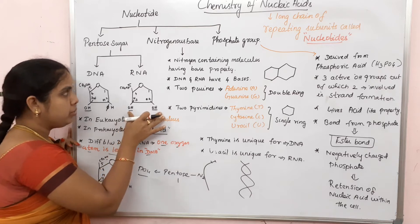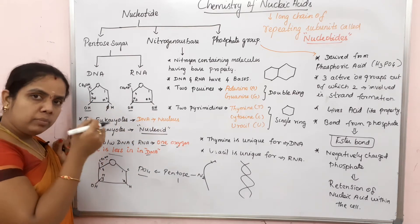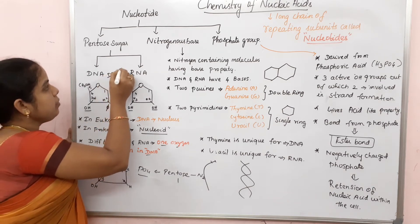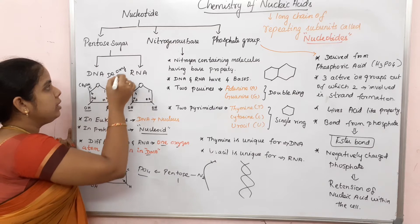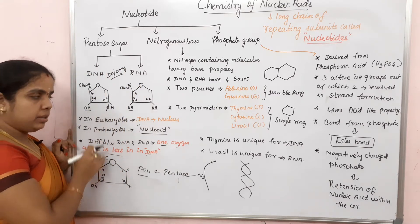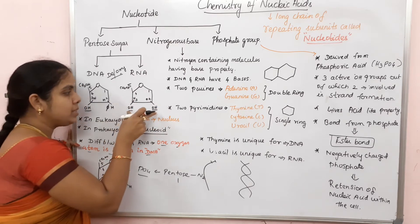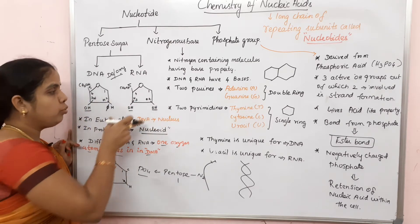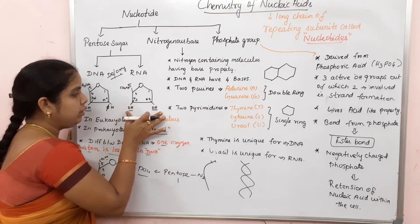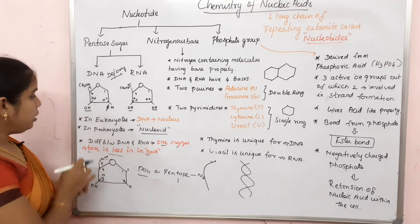This is why it is called deoxyribose - 'deoxy' means removal of one oxygen. Ribose has 2 OH functional groups, while deoxyribose has only one OH functional group - the oxygen is less in DNA.